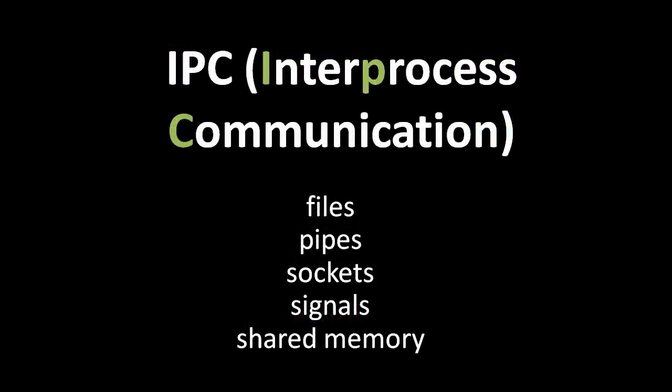IPC, or inter-process communication, is an umbrella term for any mechanism of the OS that facilitates communication between processes. The simplest kind of IPC — files — can be read and written by multiple processes and thus can serve as channels of communication between them. Other mechanisms include pipes, networking sockets, signals, and shared memory, and we'll discuss some of these in the unit on Unix system calls.